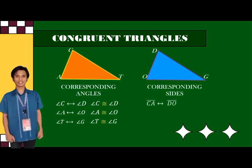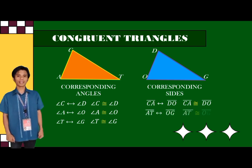And for the sides, side CA is congruent to side DO, side AT is congruent to side OG, and side CT is congruent to side DG.